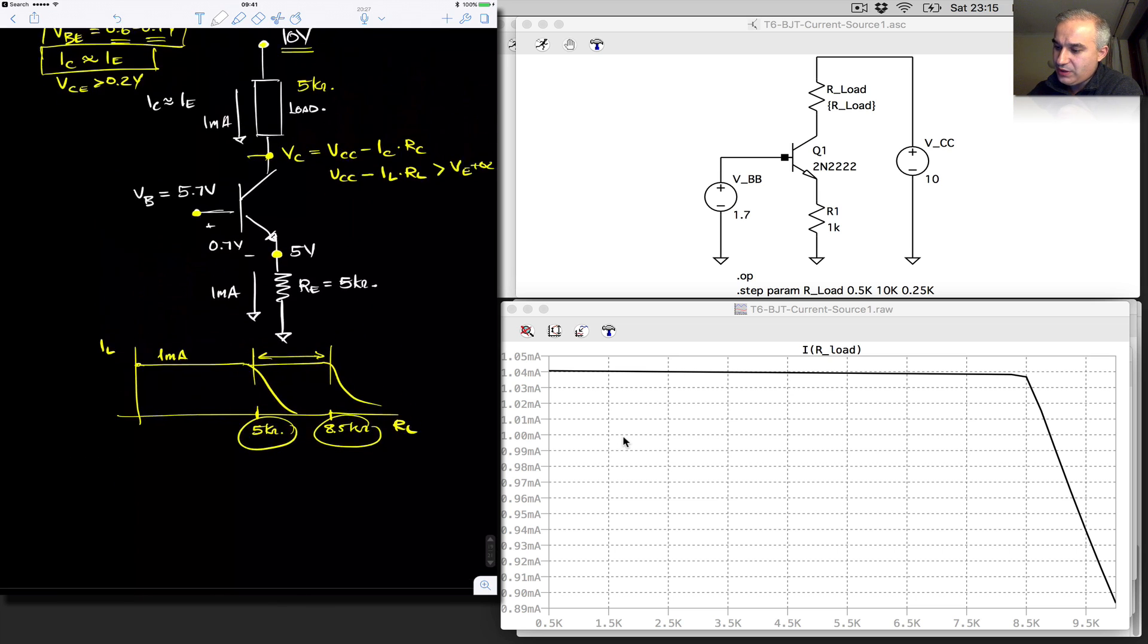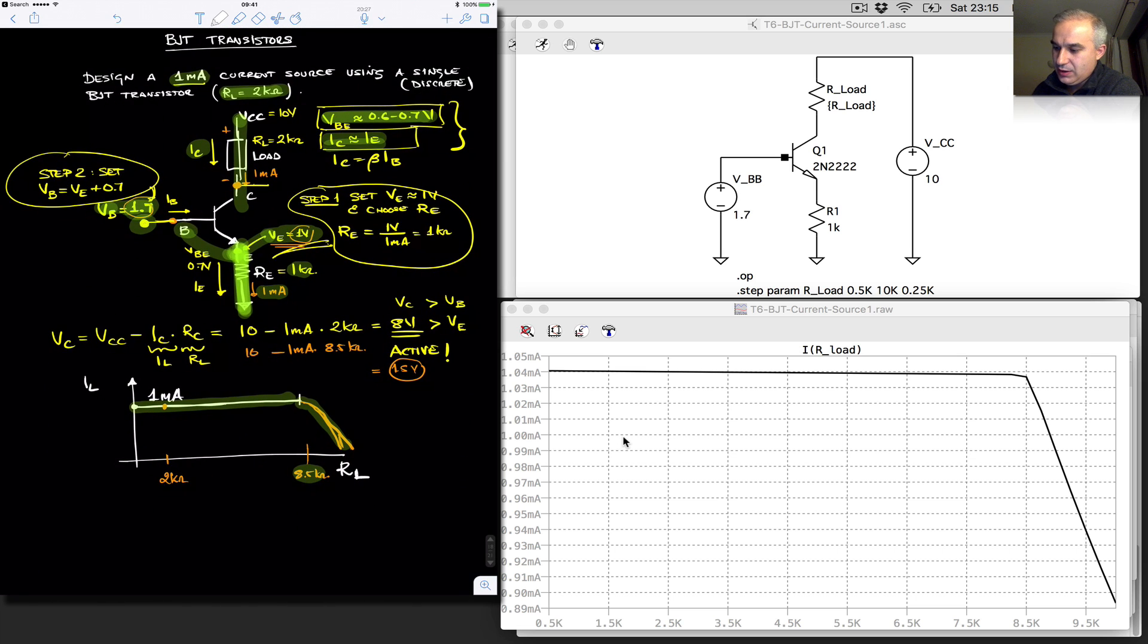So you recall what we did previously was with two sources. If we have, for instance, a VCC of 10 volts, we could set a base emitter of around 1 volt, set another source, but it required another source of 1.7 volts that created the drop of 0.7 volts.